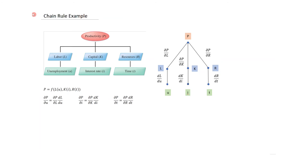The chain rule was illustrated with an economics example. We have a picture describing relationships between productivity and labor, productivity and capital, and productivity and resources. We want to know how productivity depends on unemployment, interest rate, and time — drawn out as a chain diagram with P at the top and U, I, T at the bottom.